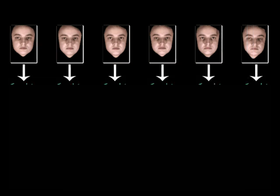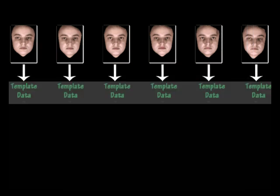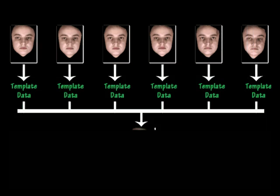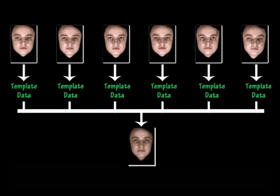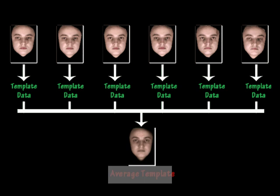For every expression of the subject we create the template data using the Malpha algorithm. After that we calculate the average of the template data of the particular subject to get an average template which is used for outer correlation. This process is concerned with training.